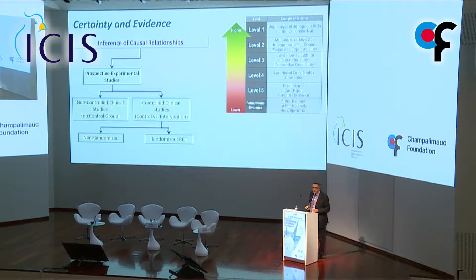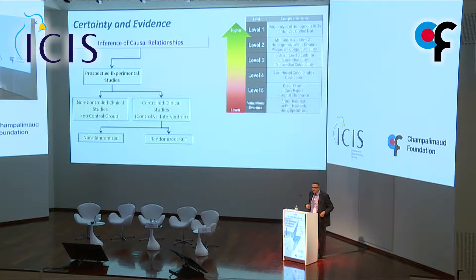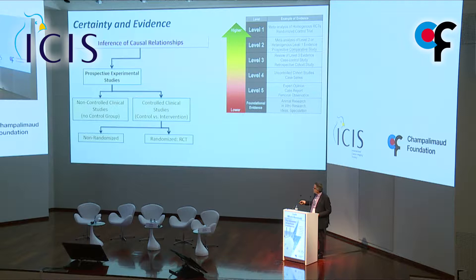Let's go into certainty and evidence. If we look at what is recognized as the best way to perform clinical research today, to have causal inference of relationships between what we measure and clinical reality, most people, most centers, most journals recognize prospective experimental studies — mainly clinical trials, either non-controlled or controlled with interventions, without or with randomization — as the best evidence. Those based on randomized controlled trials, mainly with meta-analysis or even heterogeneous prospective comparative studies, are the best ones.